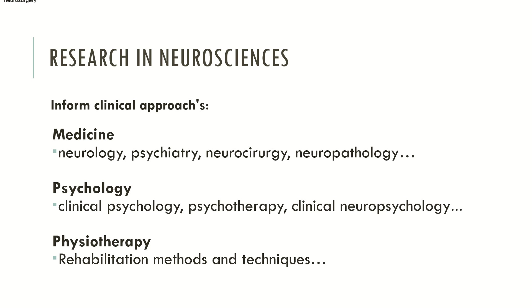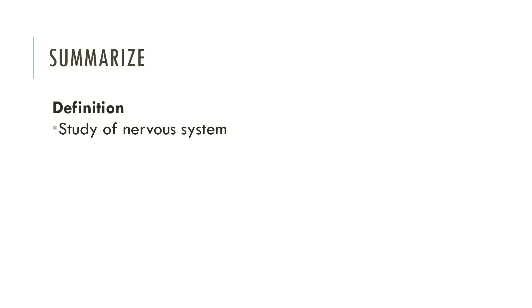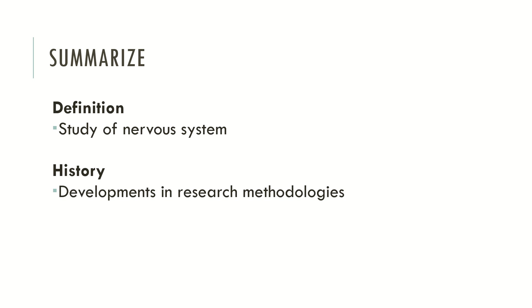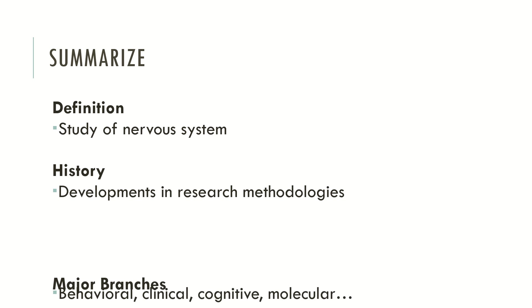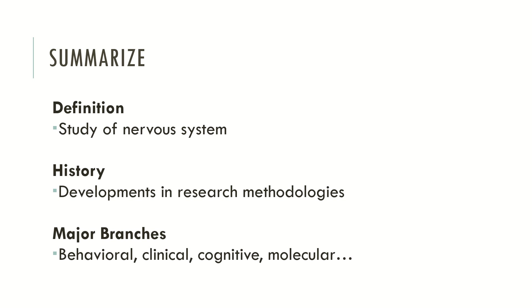Now let's summarize the contents of this video. We looked at the definition of Neurosciences, which is mainly the study of the nervous system. We looked at the history of Neurosciences and how it developed in research methodologies. We also looked at the major branches of Neurosciences, which include behavioral, clinical, cognitive and molecular sciences.